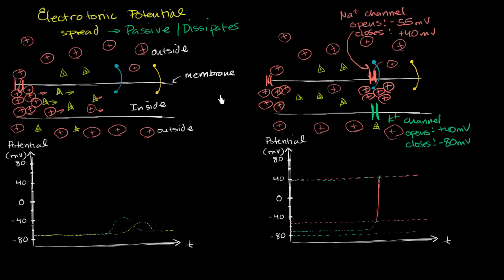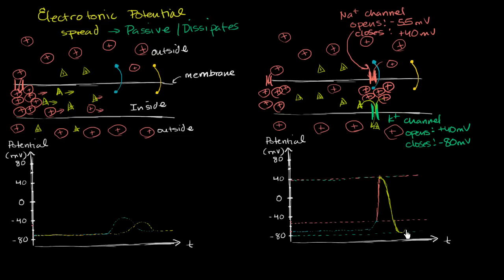And you also have the potassium channel opening. Now you're more positive on the inside than the outside, so the positively charged potassium ions want to get out of this positive environment. The voltage gets more and more negative, going beyond neutral, because potassium goes down not just its voltage gradient but also its concentration gradient — there's a higher concentration of potassium on the inside because of the sodium-potassium pump. So potassium keeps going out and out, and at negative 80 millivolts the potassium channel closes, and we can get back to our equilibrium state.